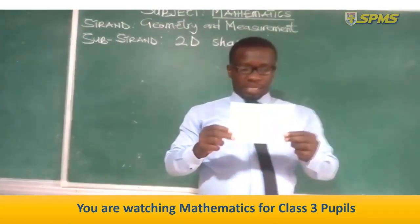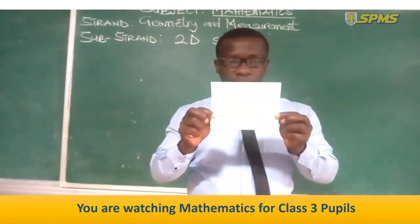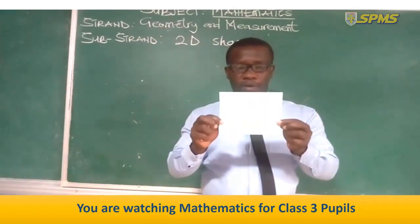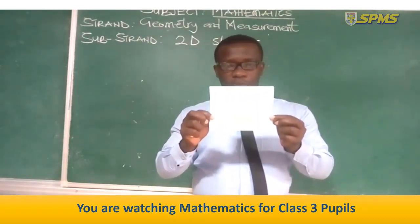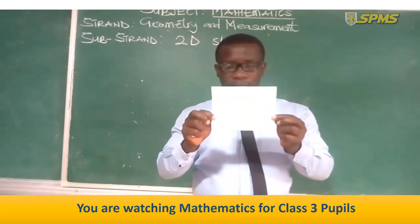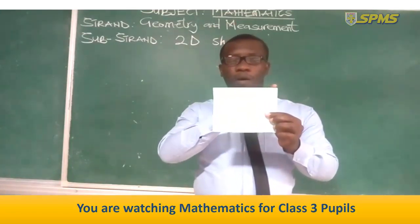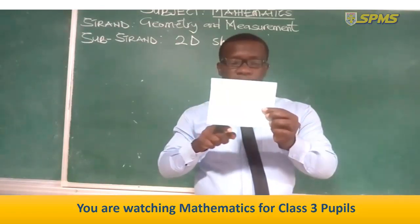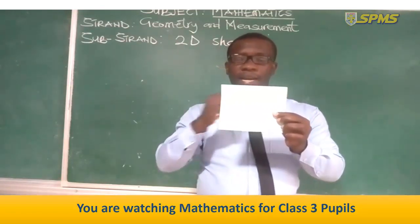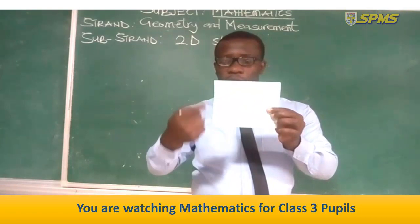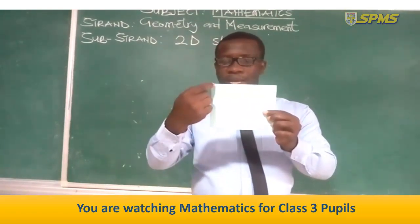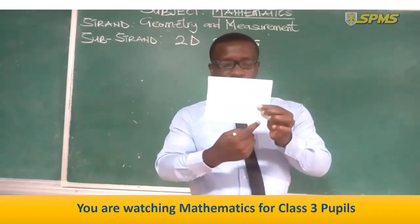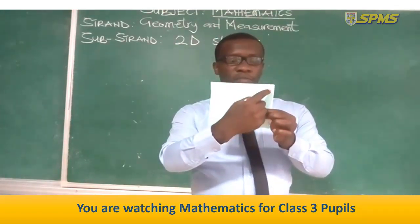Can you identify this shape? A square. What makes this a square? All the sides are equal. It has four corners — one, two, three, four.